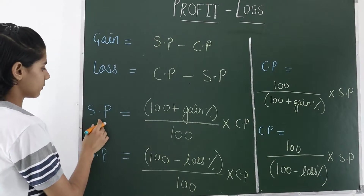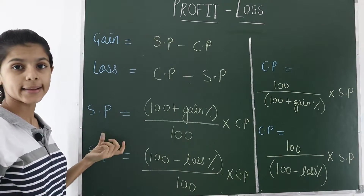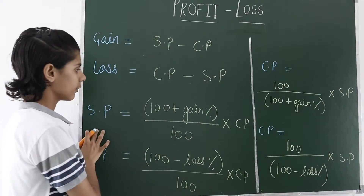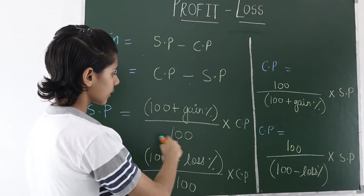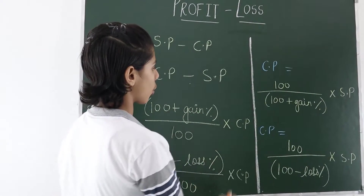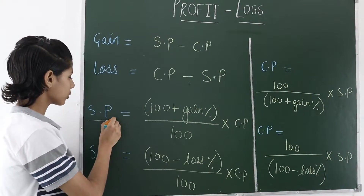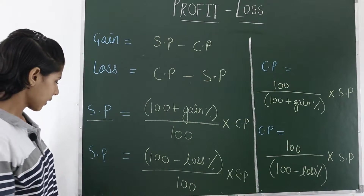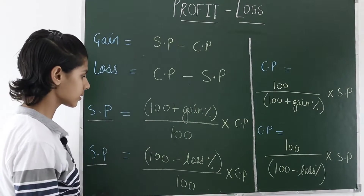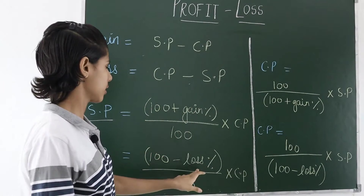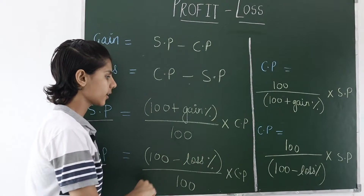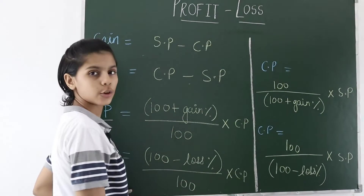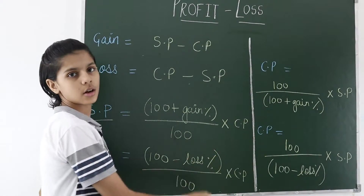When we have to calculate the selling price and we are given the cost price and the gain percent, the formula is: SP = (100 + gain%) ÷ 100 × cost price. And when we have to find the selling price but we are given a loss percent instead, the formula is almost the same — just replace plus gain percent with minus loss percent.